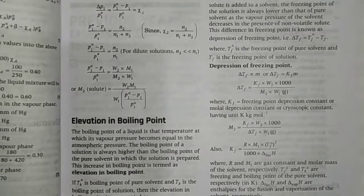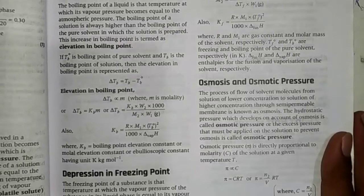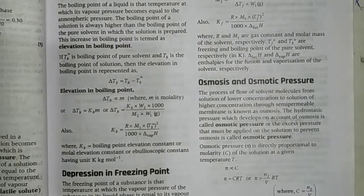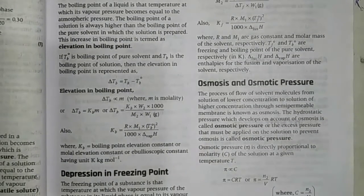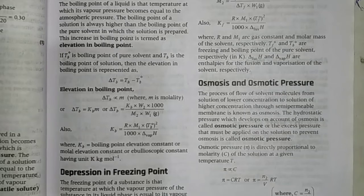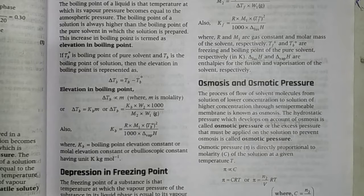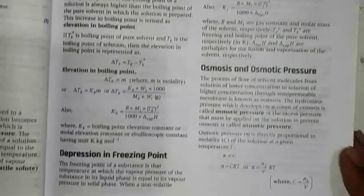The second colligative property is elevation in boiling point. Similarly, by using this property we find the molar mass of the solute as well as some other terms like enthalpy of vaporization.